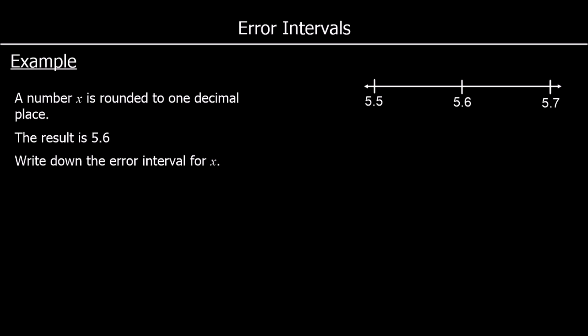Here's an example: a number x is rounded to one decimal place, the result is 5.6 — write the error interval for x. If we rounded our number to 5.6, it must have been closest to 5.6 to one decimal place. Looking at halfway between 5.5 and 5.6, which is 5.55, and halfway between 5.6 and 5.7, which is 5.65 — these become the bounds of what our number could have been.